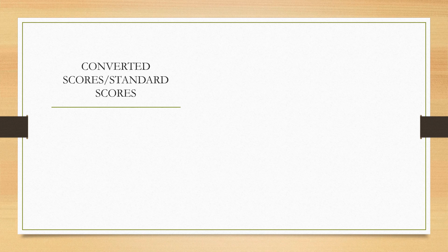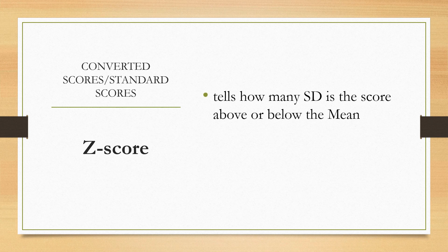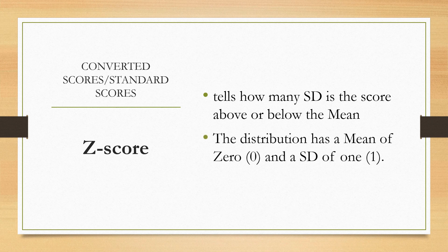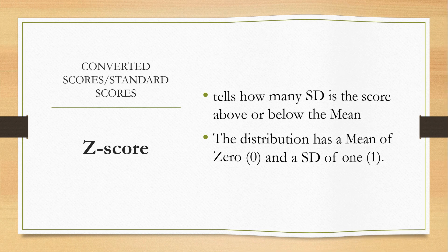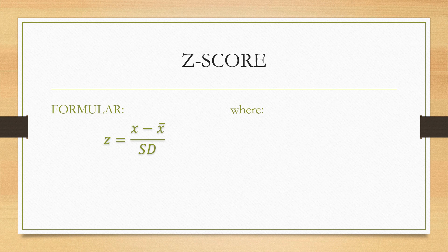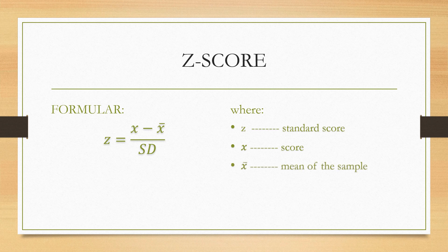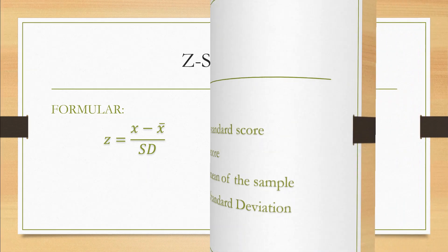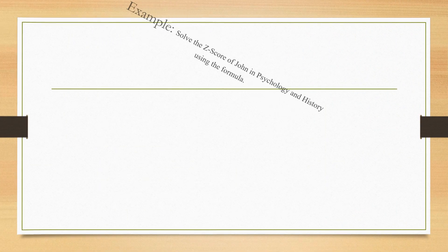To answer the question in our problem sample, let's have first our second topic which is all about converted scores or standard scores. The first one is the Z-score. Z-score tells how many SD is the score above or below the mean. The distribution has a mean of 0 and an SD of 1. The formula for Z-score is equal to X minus X-bar all over SD, where Z means the standard score, X means the score, X-bar means the mean of the sample, and SD means the standard deviation.